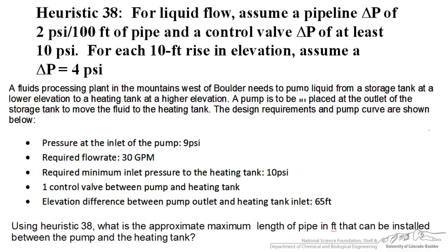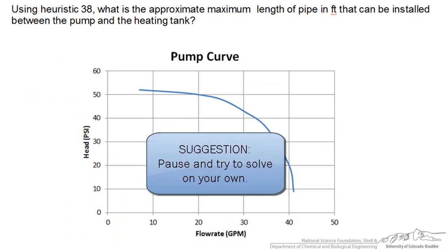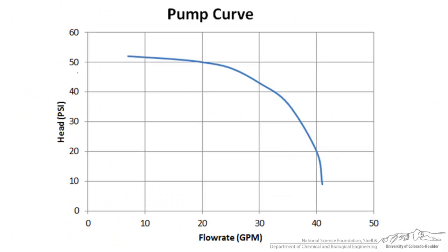The last bit of information you'll need is the pump curve. A pump curve gives you an idea of what the head pressure will be at any given flow rate. In this problem, we're interested in a flow rate of 30 gallons per minute, which means the maximum pressure head we can accomplish with this pump is about 43 psi.